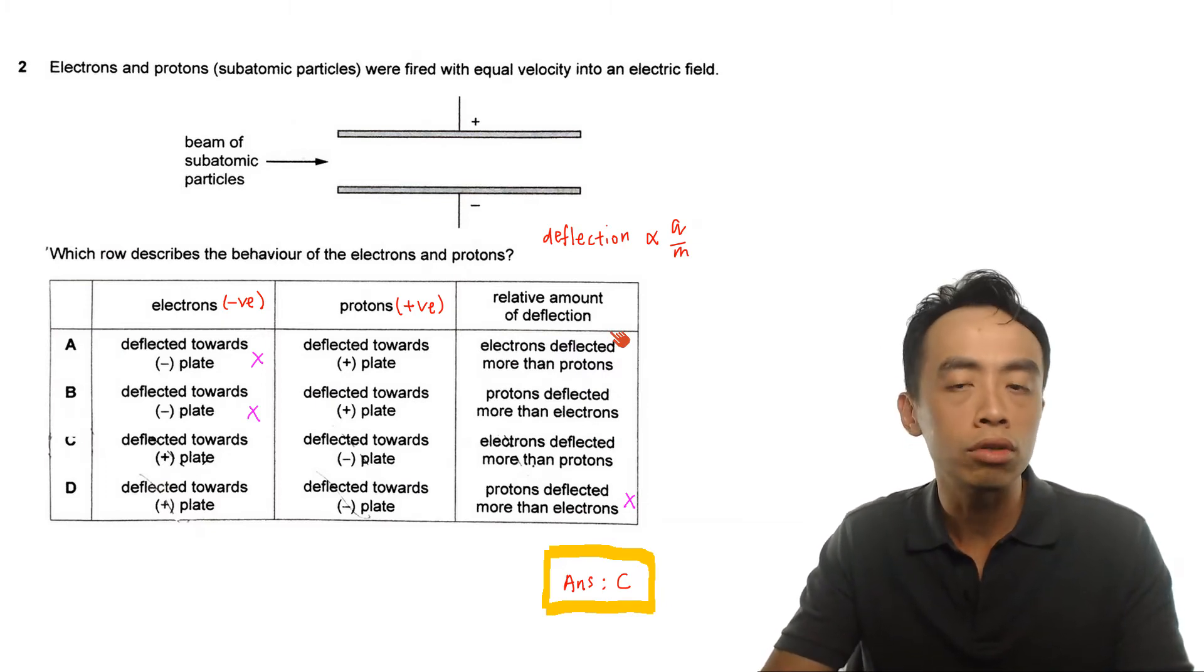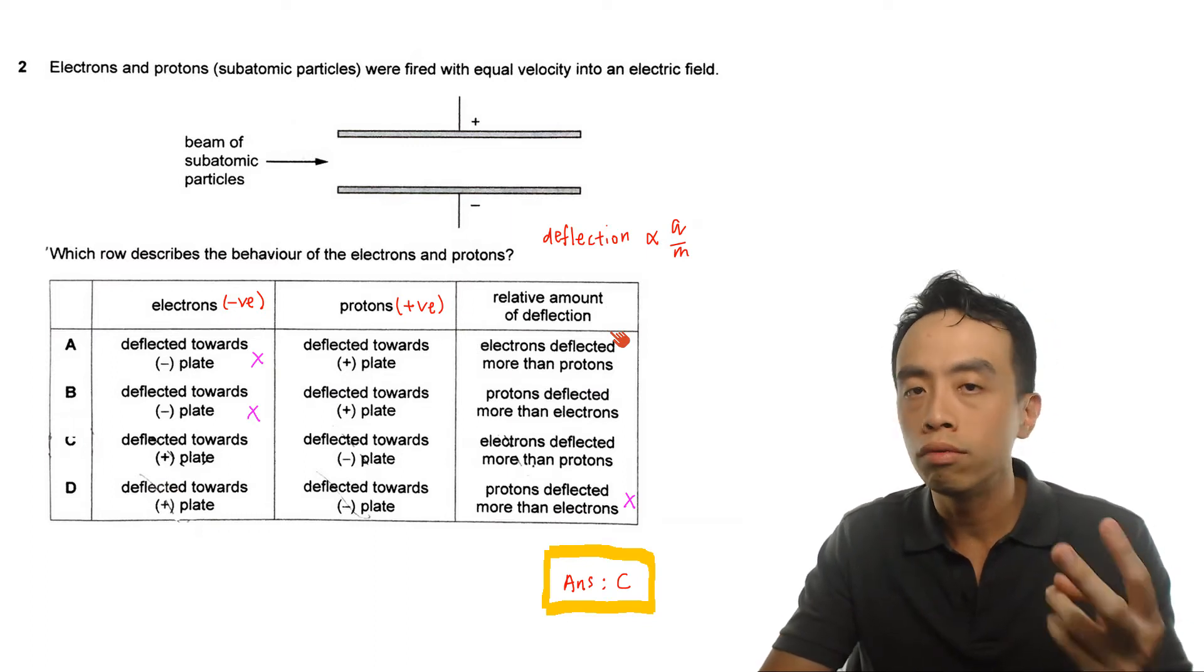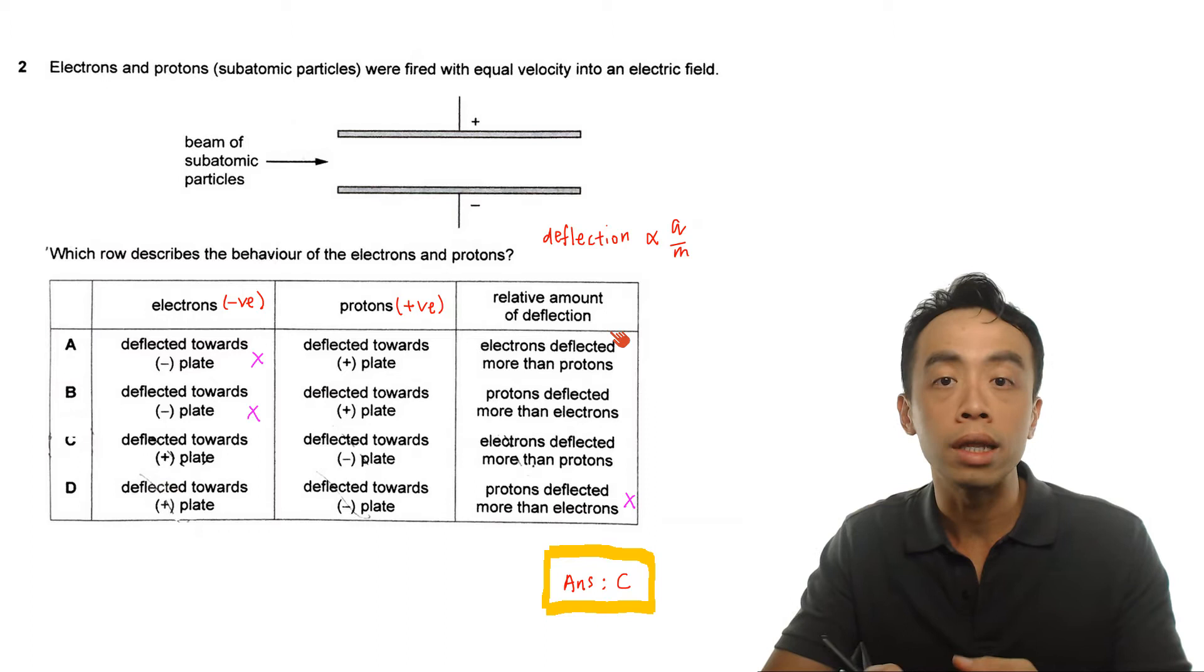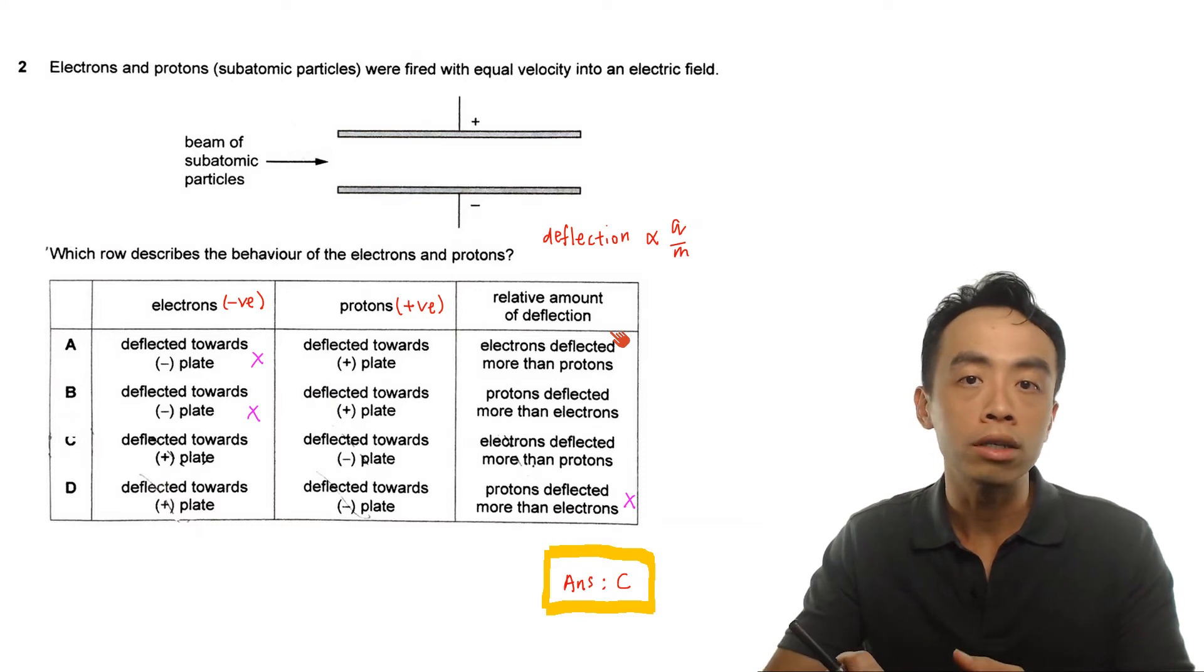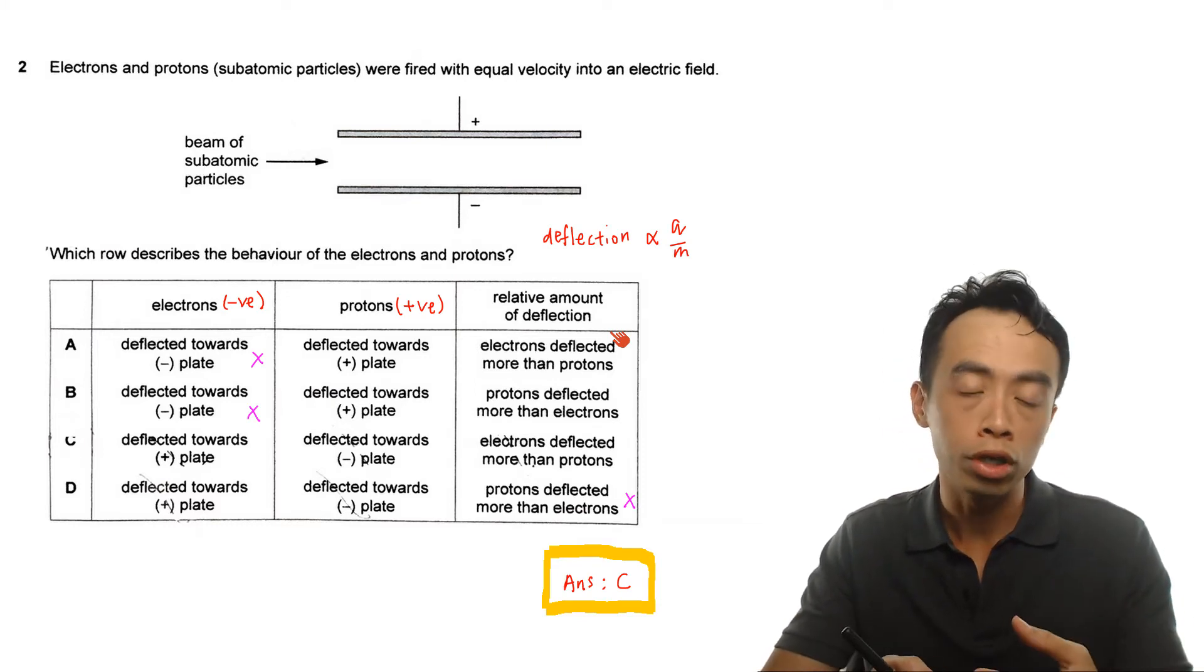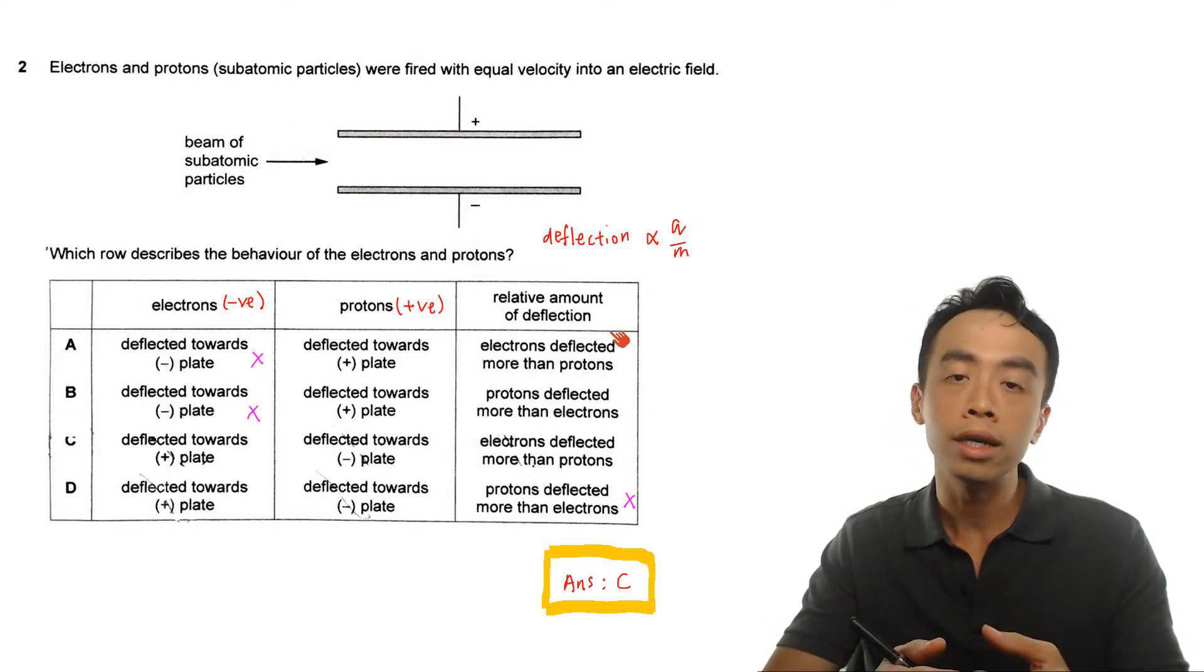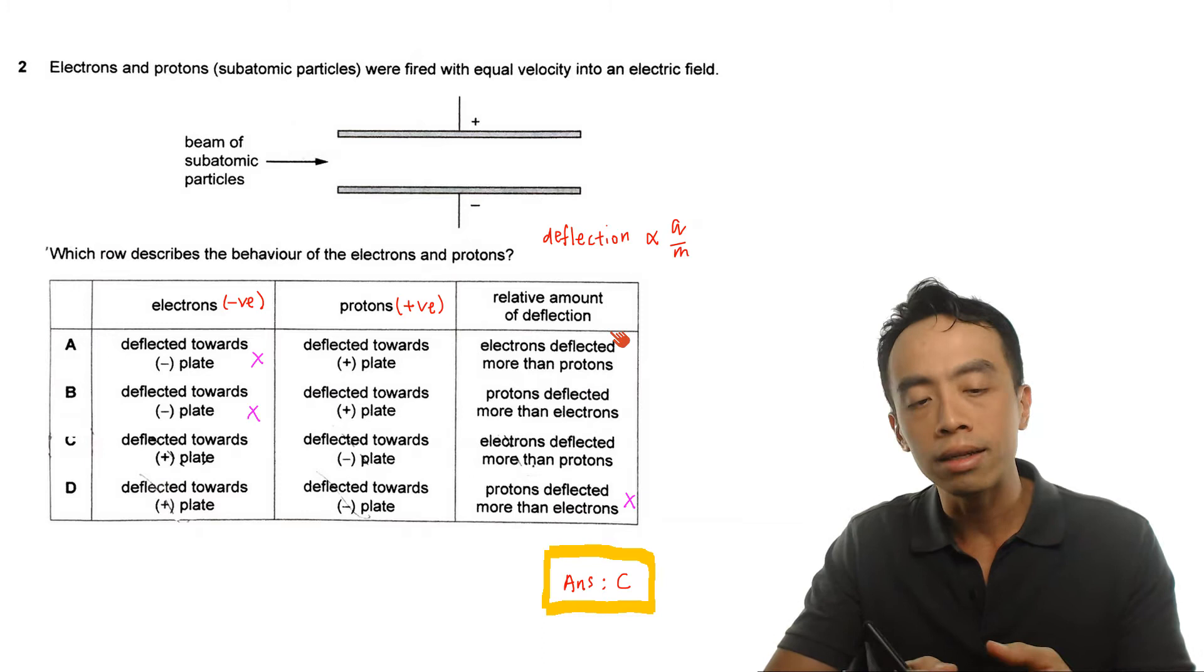Now this question is very simple because we just need to make use of two very simple ideas. The first one is the direction of the deflection. If the species is negatively charged then it will be deflected towards the positive electrode because unlike charges will attract each other, like charges will repel each other and if it is positively charged then it will be deflected towards the negative electrode.